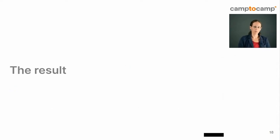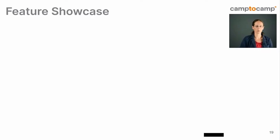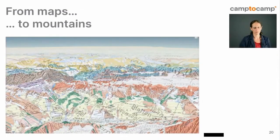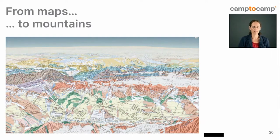After about six months of development, the beta version was published on swissgeol.ch and has since been continuously updated and improved. I'd like to give you a short tour of the different features. You can view swissgeol in a 2D way, looking straight down at the earth, but you can also tilt and see the mountains in precise detail — a two-meter precision terrain and height model has been integrated.